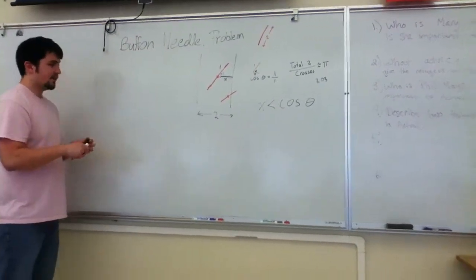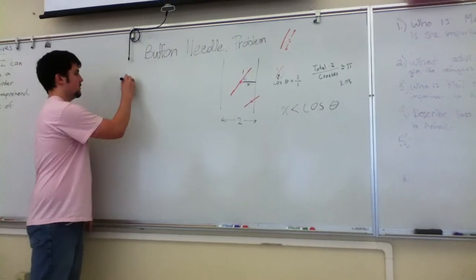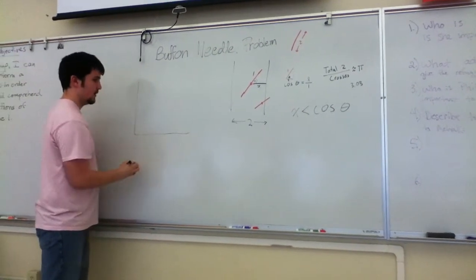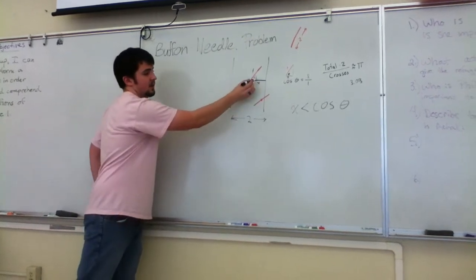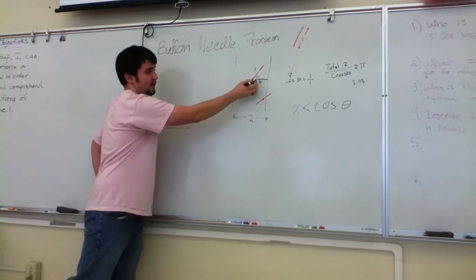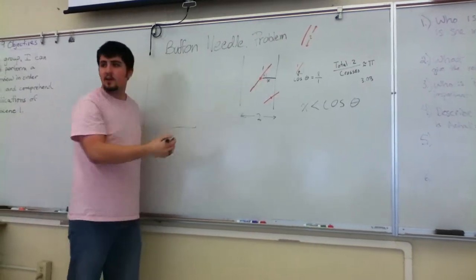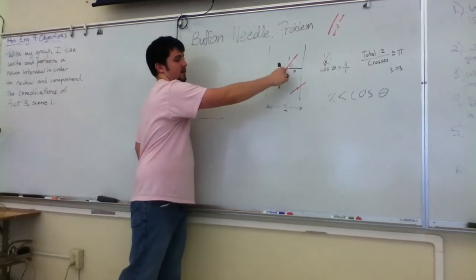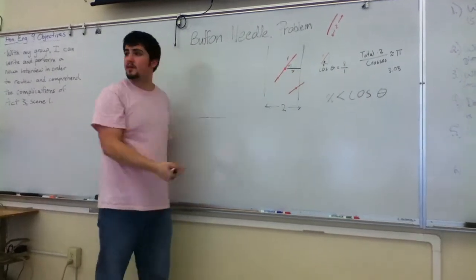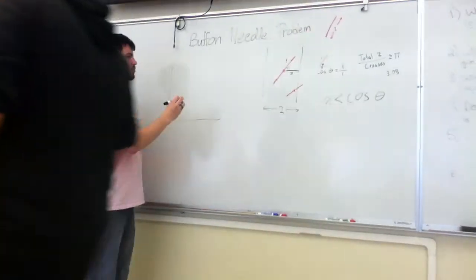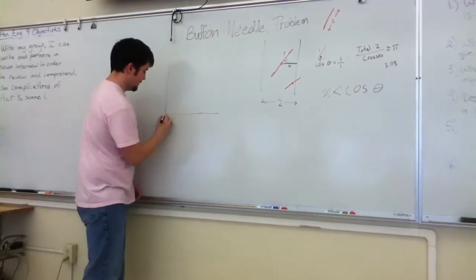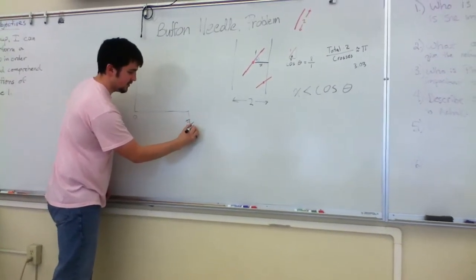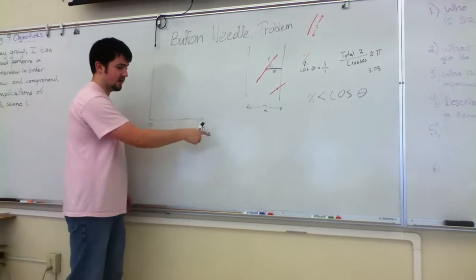We can graph both these things. We're also assuming that we have a domain of theta that goes from 0 to 90 degrees. Because if it goes beyond that, we'll just measure this angle or this angle. So we have a domain of 0 to pi over 2 because we're in radians. This is where the pi comes in.